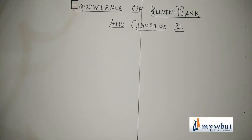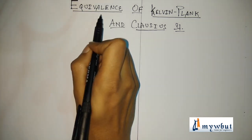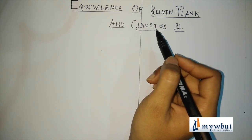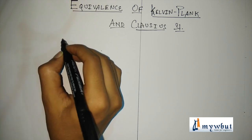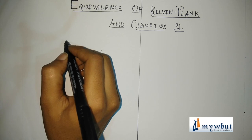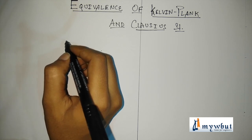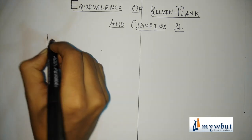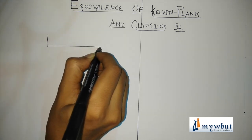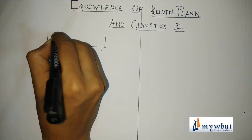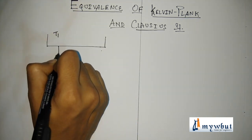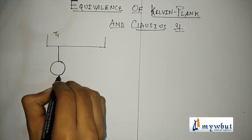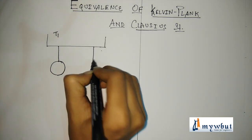The next topic is the equivalence of the Kelvin-Planck and Clausius statements. These two statements have already been discussed. Now let us understand this equivalence using two schematic diagrams.